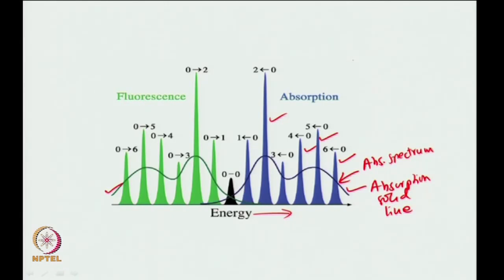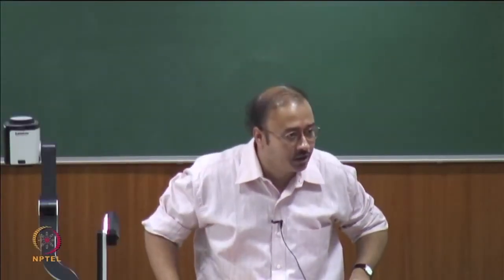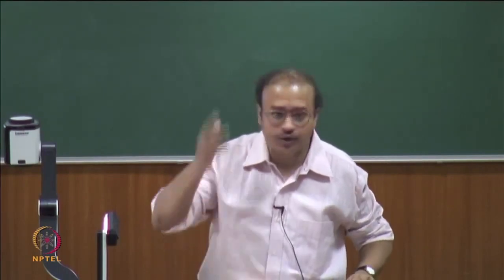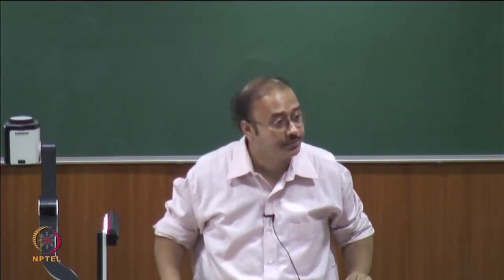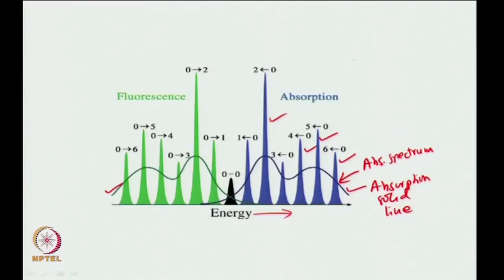Similarly, if you go to the fluorescence, you also see the fluorescence spectrum. Just to make a passing comment: the 0-to-0 transition should be equi-energetic for both fluorescence and absorption — in absorption you go from 0 to 0, and in fluorescence you also come down from 0 to 0, so they coincide and fall at the same place. Number two: if you look at the fluorescence and absorption spectra and place a mirror in the middle, your fluorescence spectrum is actually a mirror image of the absorption spectrum. This is called the mirror image rule.